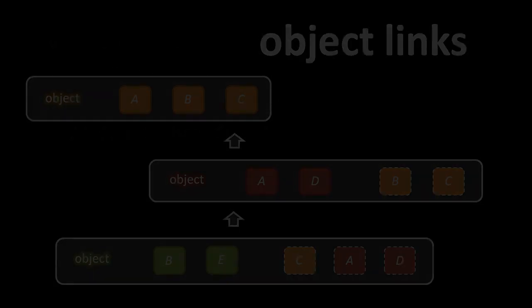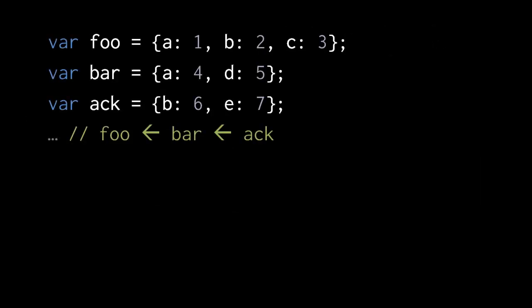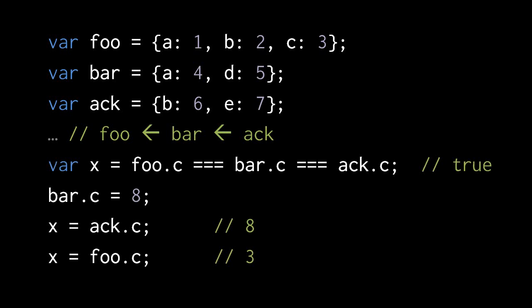Let's see how this plays out in code. Say we have an object assigned to a variable foo with three properties: A, B, and C. Then we have another object assigned to a variable bar with two properties, A and D, and a third object assigned to a variable ac with two properties B and E. Let's say that ac links to bar, and the object in bar links to the object in foo. If we test whether foo.c is equal to bar.c is equal to ac.c, we're going to get true.